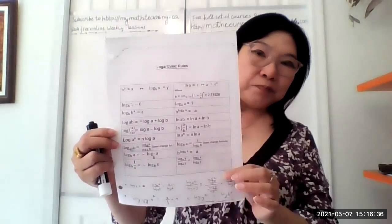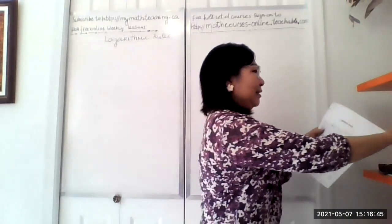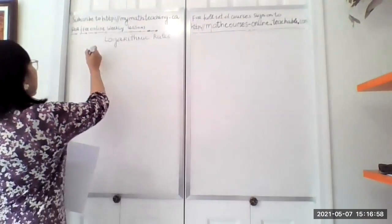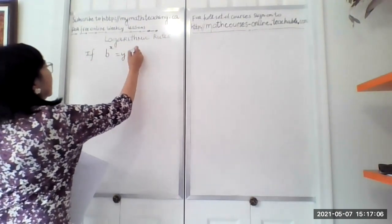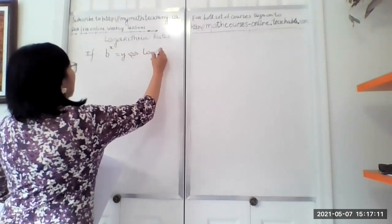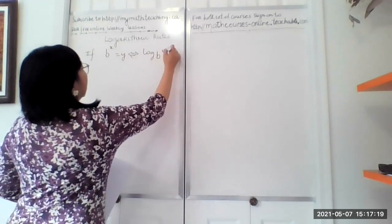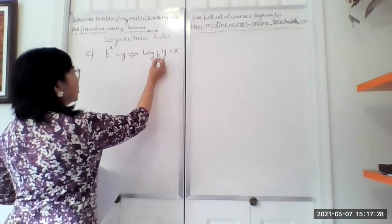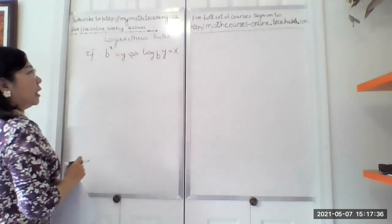You will remember these laws when you perform logarithmic evaluation. So the first law — let's start with the basic form. If b to the x equals y, then we know that log base b of y equals x. So the idea is the inverse relationship: if b to the x equals y, then log base b of y equals x — that's the log of the power.